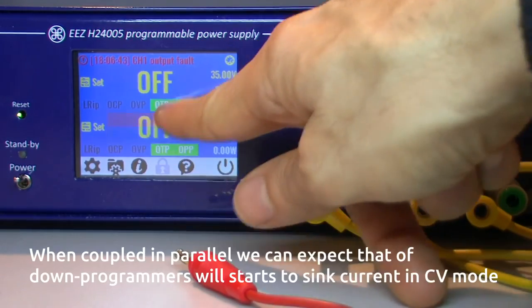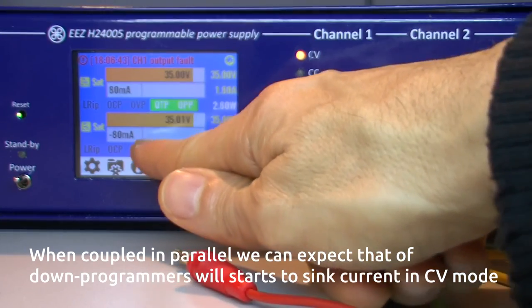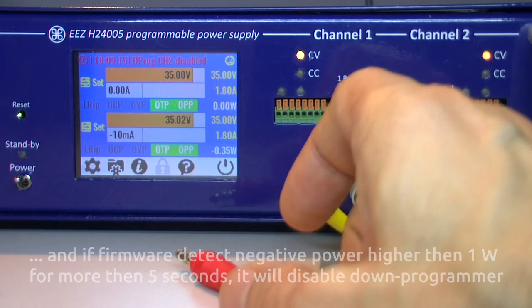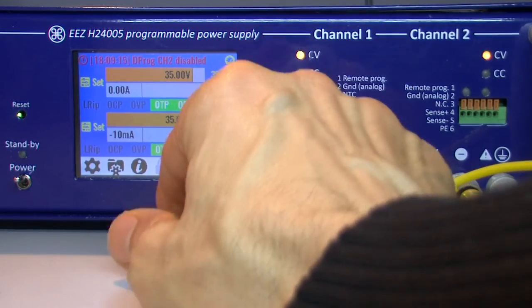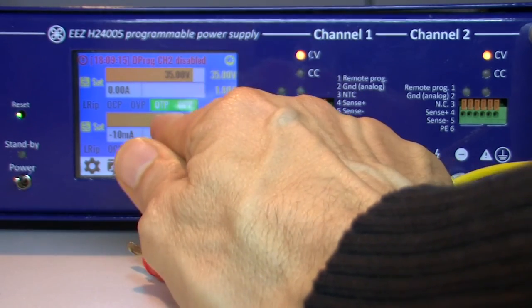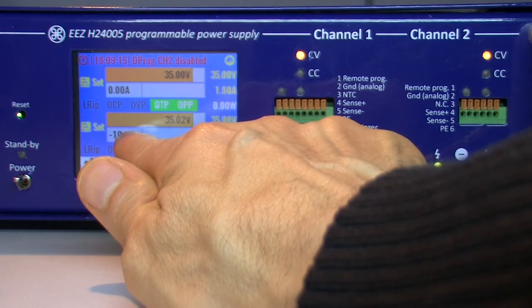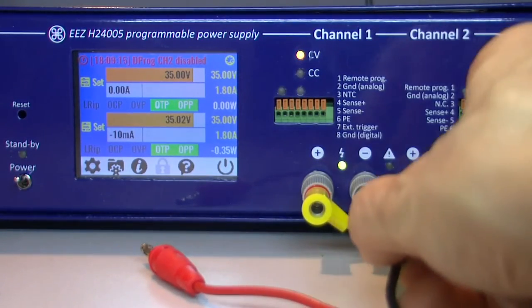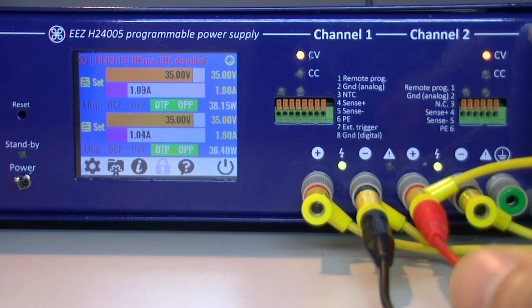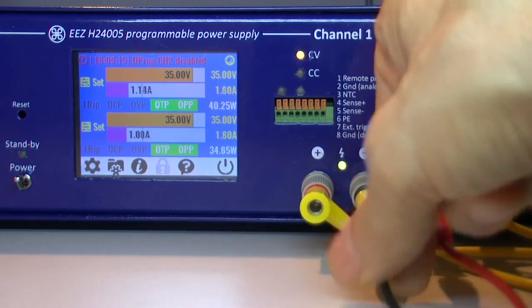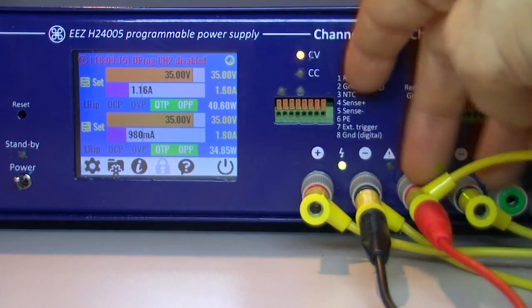When we start with both channels activated, again some current flows from one to another channel because the down programmer is activated. And we can see that on channel 2 it is disabled now, and now the channel is in much better position - it still sinks some current but it's minimal. Okay, and now we can connect our load, and with load it works just fine. Now the total current is not just one point something but it's around 2 amps because the outputs are connected in parallel.